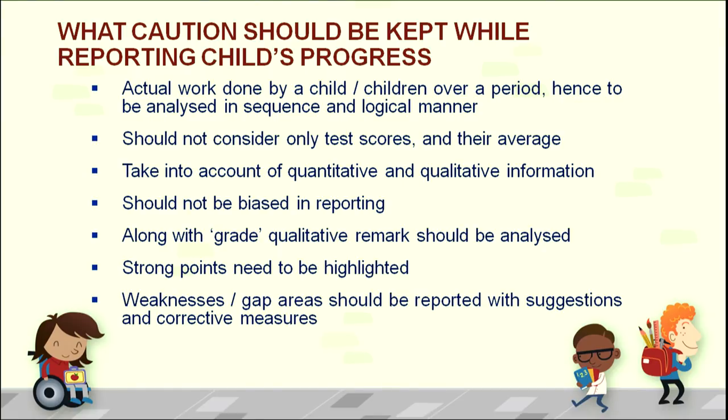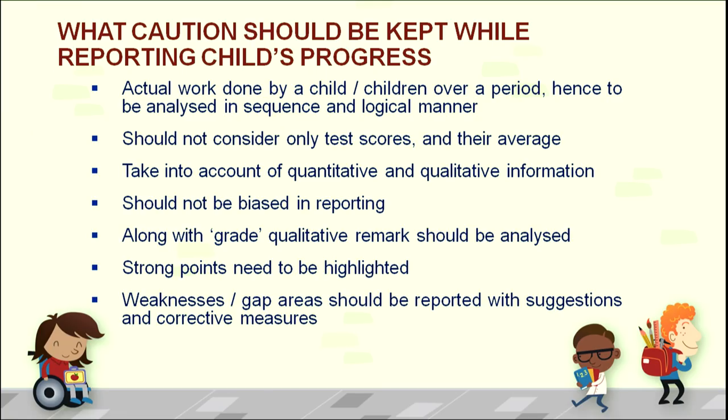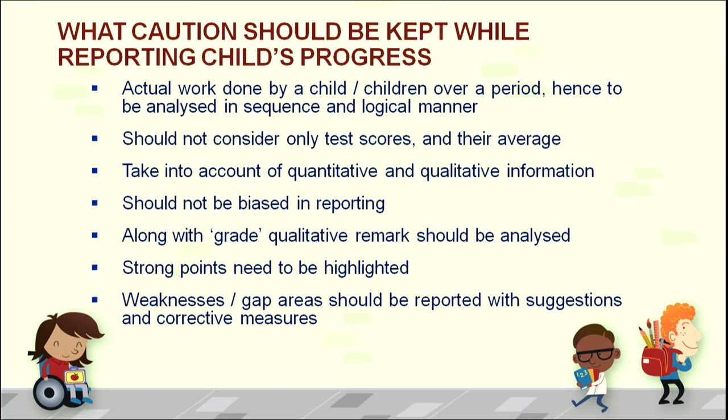Along with grades, qualitative remarks are always a very healthy approach to reporting a child's learning, as they give parents a lot of scope to understand what a child can and cannot do. Strong points need to be highlighted — what are the child's strengths, what can the child do best — and these should always appear at the beginning. Weaknesses should also be reported, but in the form of suggestions: what can the child do better if certain inputs are provided, whether at home, at school, or with parental involvement.